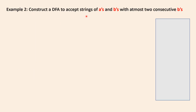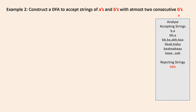Let us look at another example. Construct a DFA to accept strings of A's and B's with at most two consecutive B's. At most two consecutive B's means the string can have a maximum of two B's together. If it has three or more B's together the string should be rejected. If there are no B's at all, the string with only A's should also be accepted, because it satisfies at most two consecutive B's.